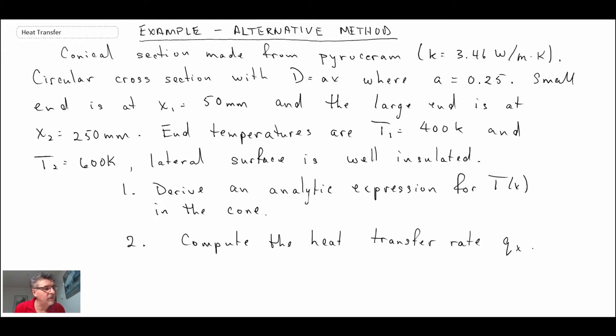So there is our problem statement. We have a conical section, which is very similar to what we looked at in the last segment. We're told the thermal conductivity. We're given information about the diameter, and recall we needed to know the area as a function of position. So knowing the diameter, we can get the area. We are told the temperatures at the two surfaces of this conical section, and then we're asked to derive two things: one is the temperature distribution as a function of position, and the second is the heat transfer rate. Let's begin by writing out what we know, what we're looking for, and then a schematic.